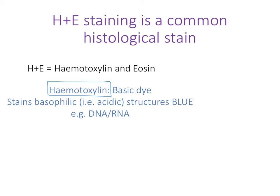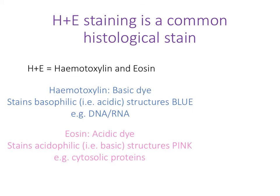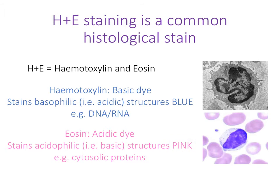Hematoxylin turns structures in the cell blue. The stain also contains eosin, which is an acidic dye, so basic things in the cell are attracted to it and they stain pink. Quite a lot of cytosolic proteins have basic residues, so those bind to eosin and stain pink. This stain is really useful when dealing with immunology.